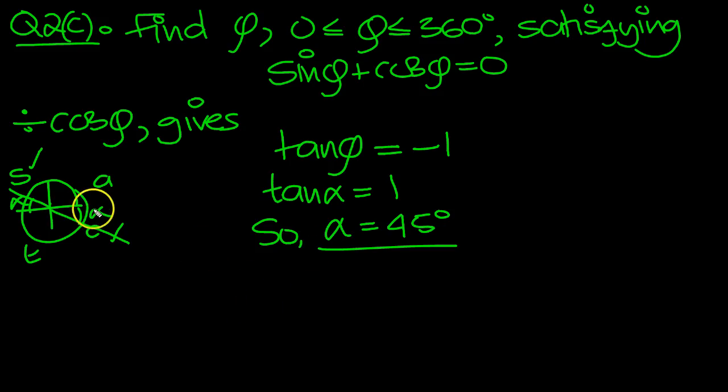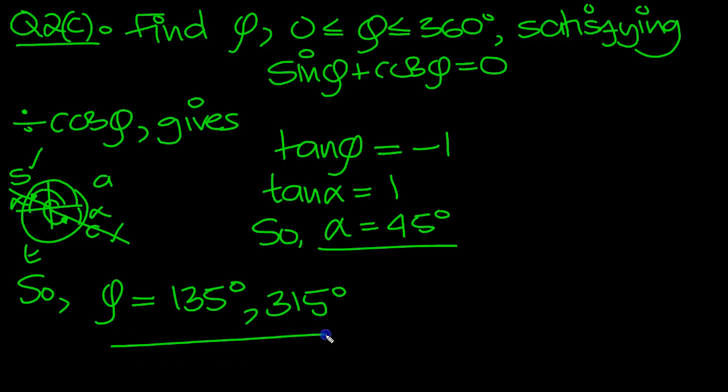Let's read off the angles then. So phi will equal two solutions. The first solution is round to here, which is 180 minus 45, which is 135 degrees. And the next solution is right round to here, which is round 360 back 45, which is 315 degrees.